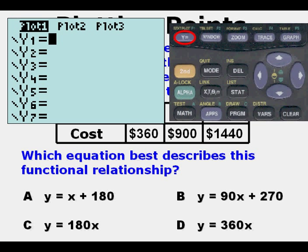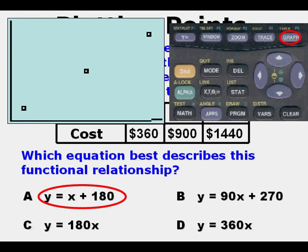Now that we've done this, we can graph and make sure we can go to our problems and enter y = x + 180. We enter that in y equals and we graph, and we don't see any line coming anywhere near any of those three points. So that is quite obviously going to be a wrong answer. We cross that out.